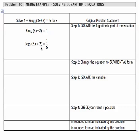I'm going to move to step 2, change the equation to exponential form. So I'm going to write my base, which is 2, raised to the 1 sixth power, equals 3x plus 2, and that's going to eliminate the logarithm from the equation.